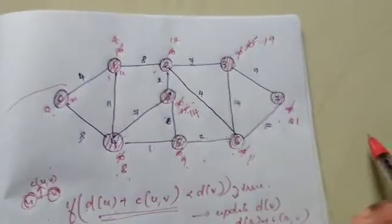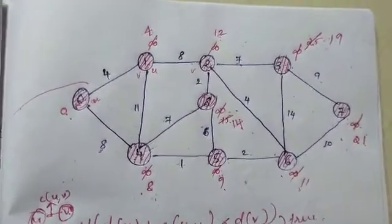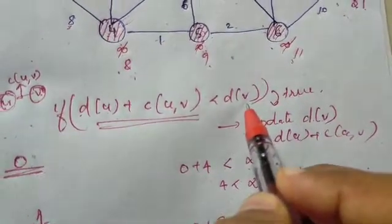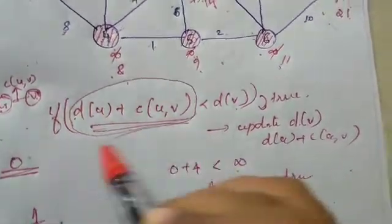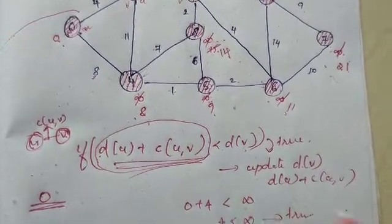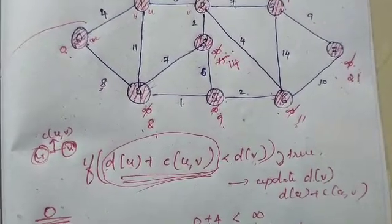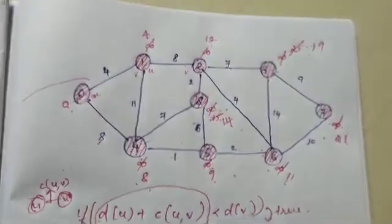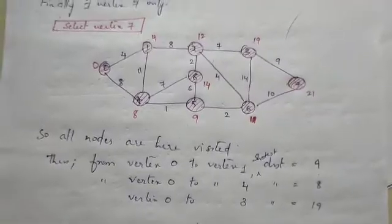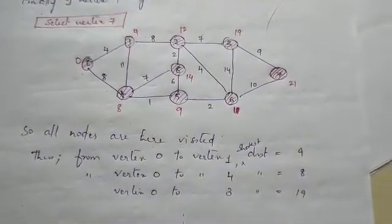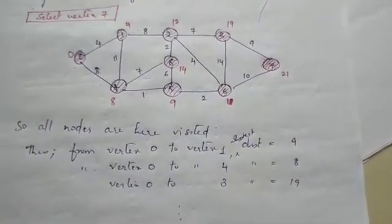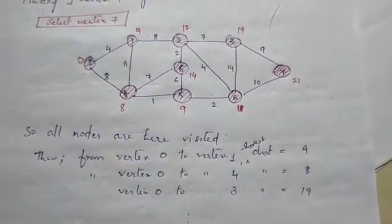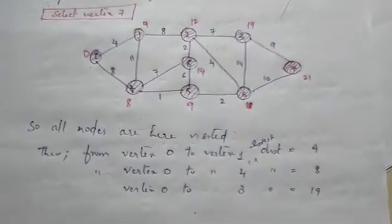So here we have the shortest path distances. The algorithm works by applying the relaxation condition d(u) + c(u,v) < d(v) — if true, we update. We visit each vertex and continue this procedure. In the next video, we will apply Dijkstra's algorithm to a directed graph.